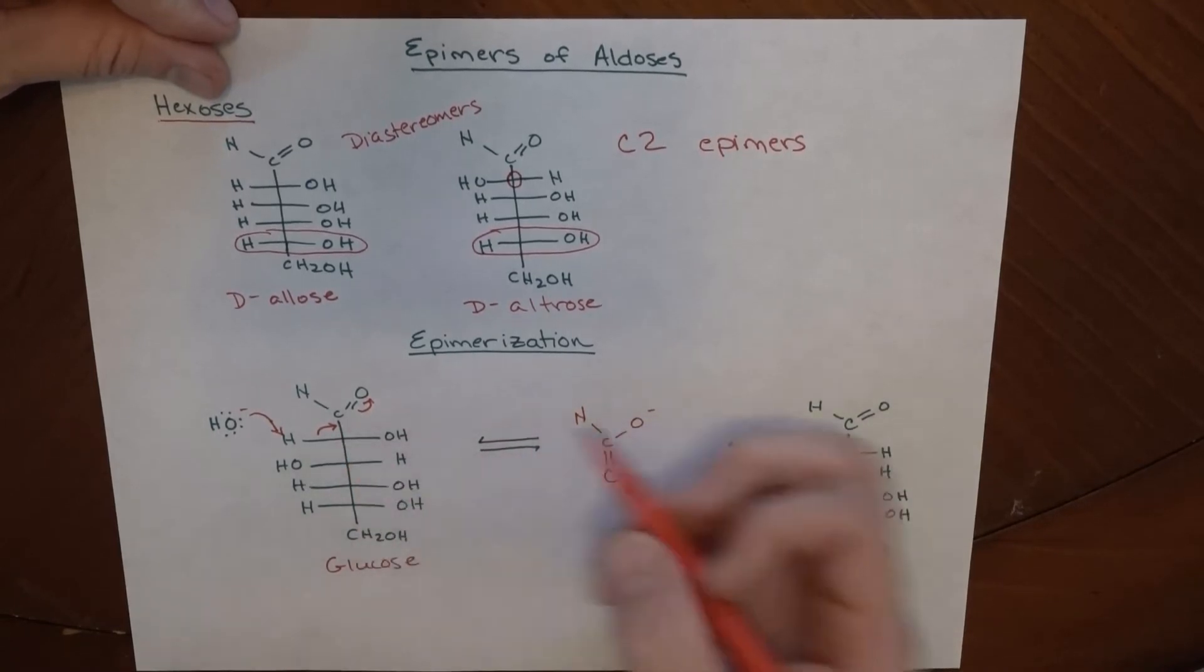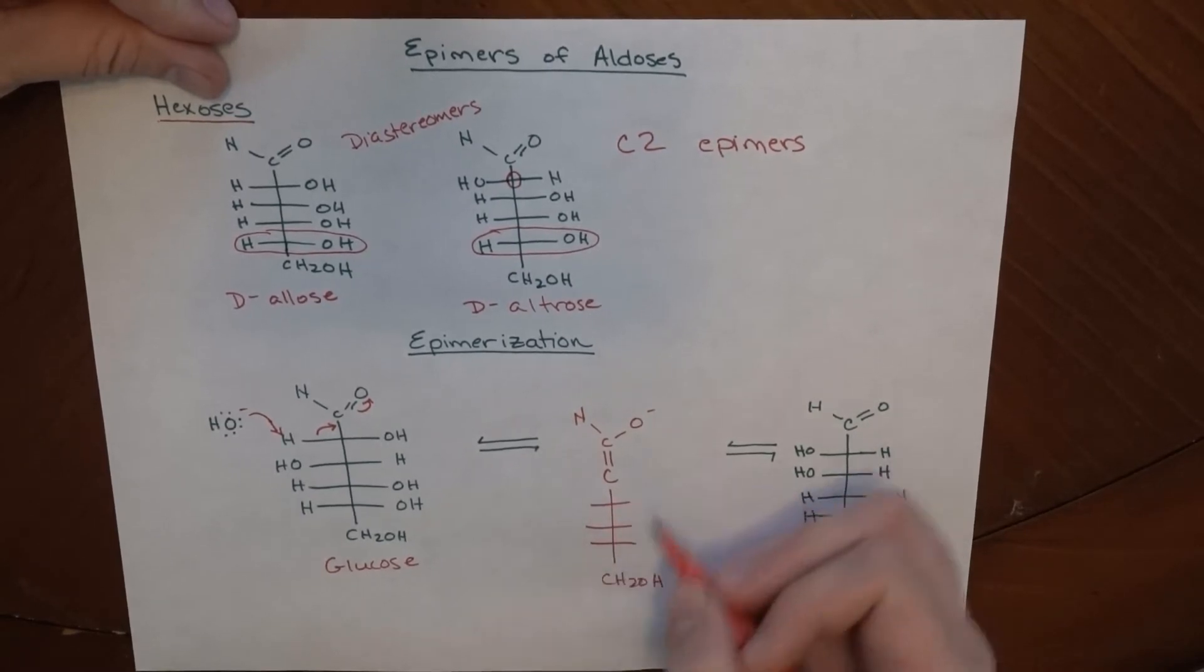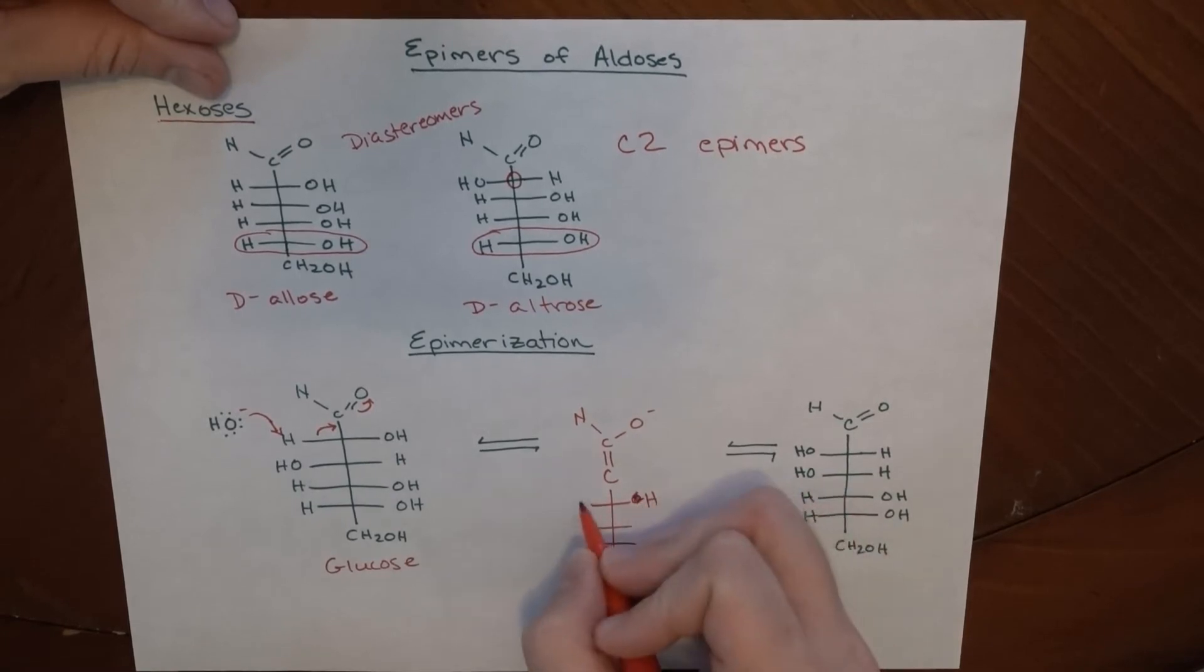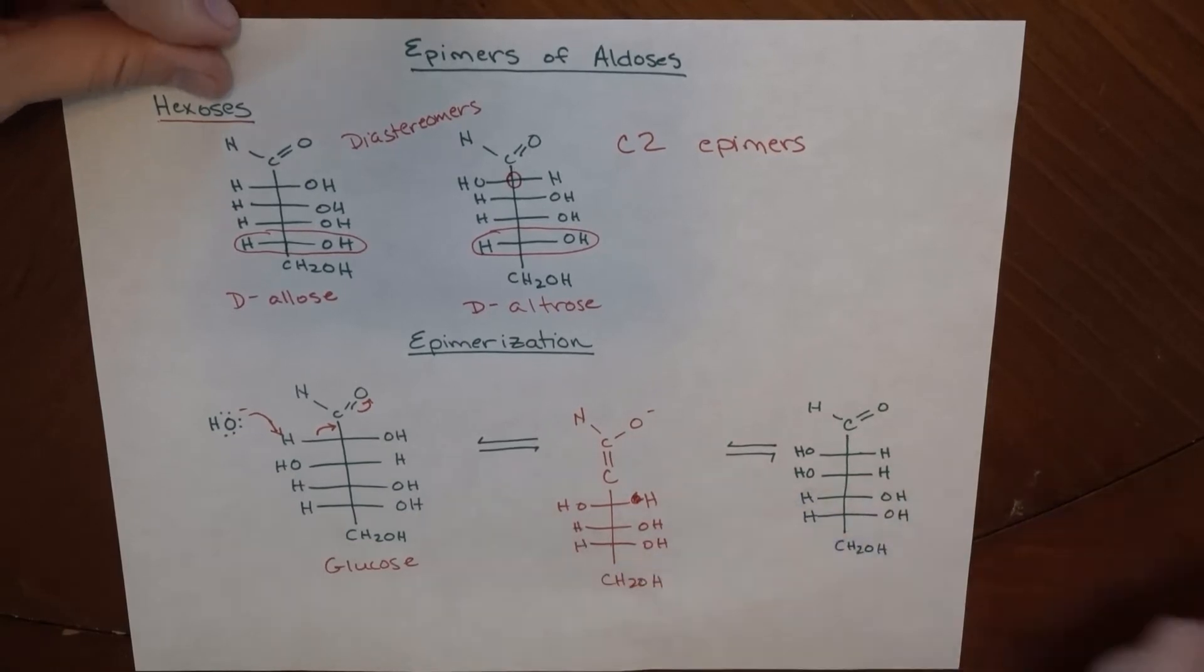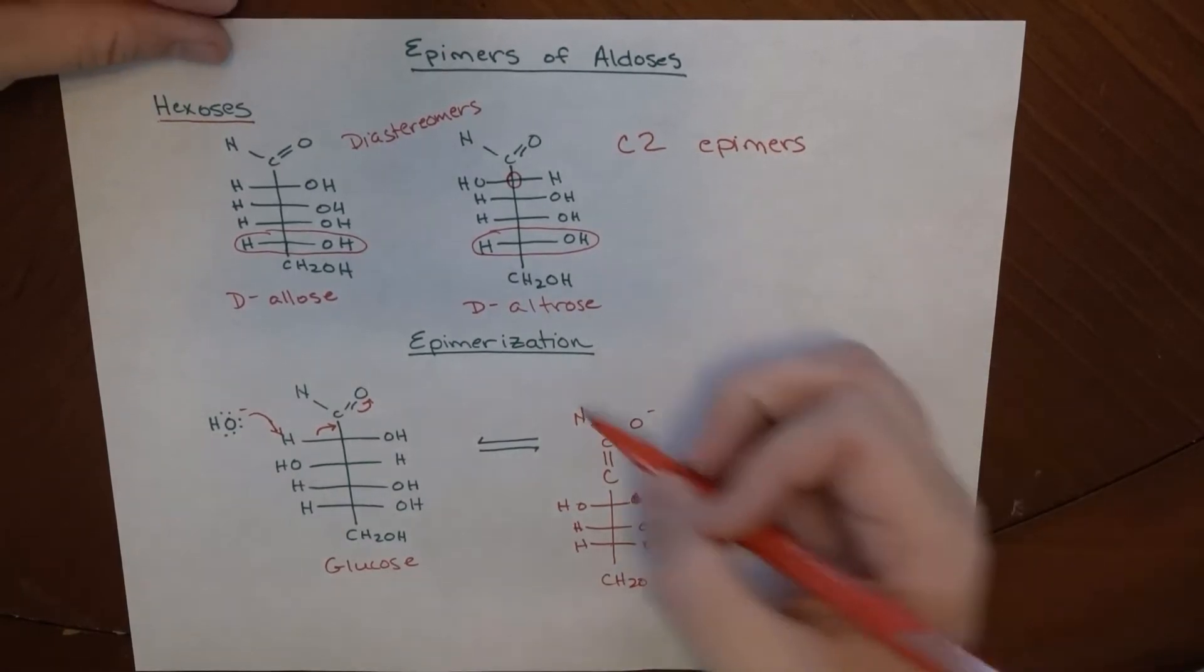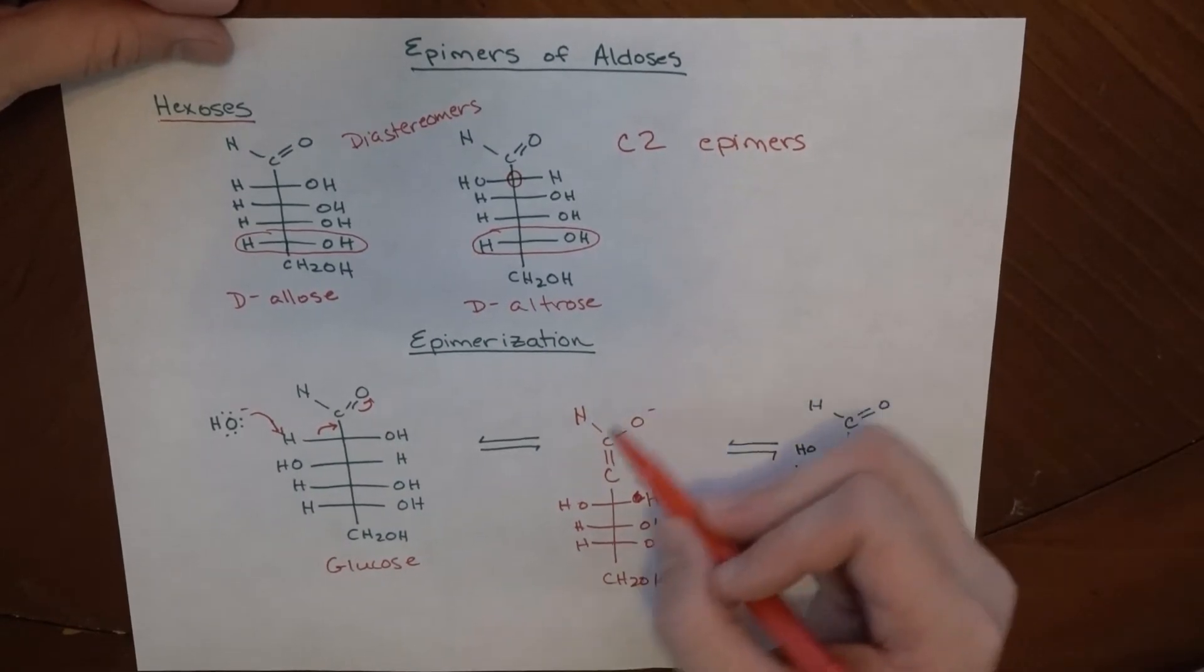So that's what happens there. We have a new double bond that formed here. We've got one, two, three - so we still have one, two, three, four, five, six carbons, just like we did over here. So we'll have our H, OH, OH, OH, H, and H. So now we have this sort of enolate here.